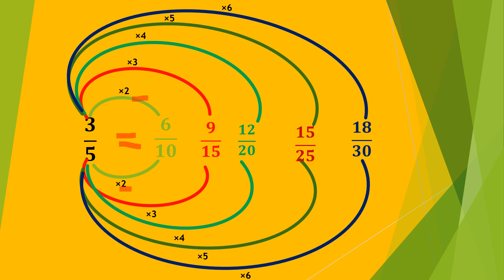Then, it is equal to 9 by 15. We are multiplying with 3. And equal to 12 by 20, multiply with 4. Equal to 15 by 25. We are multiplying with 5. And 18 by 30. Here also we will multiply with 6. These are equivalent fractions.